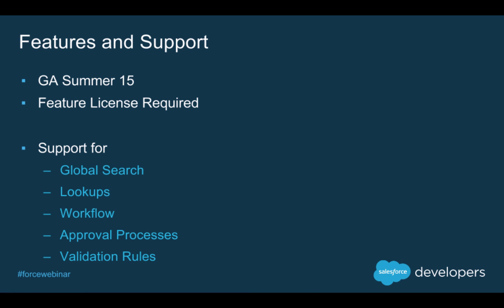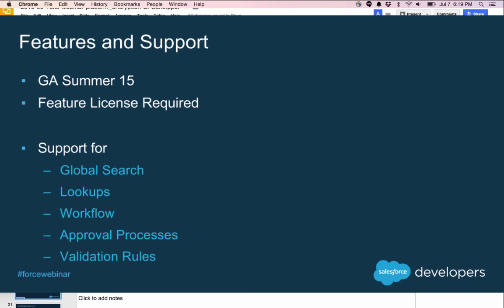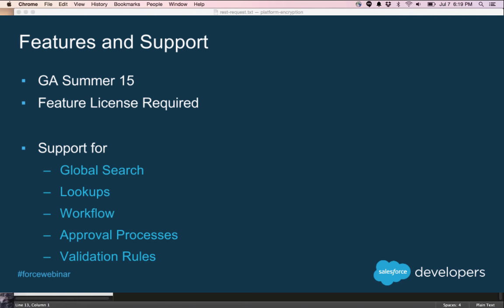This feature is GA in Summer '15, but be aware a feature license is required. If you want this in your org, have your customer talk to their account executive to get it enabled. Developer edition orgs do have this enabled right now. Current support for platform features includes global search, lookups, workflow, approval processes, and validation rules, as well as some programmatic features. I'm going to pass this now to Asaf to present about the architecture.